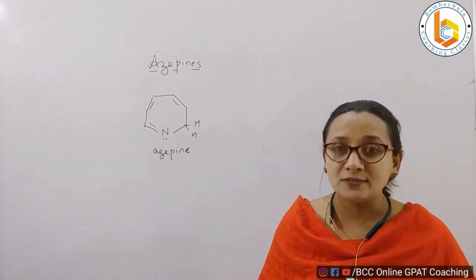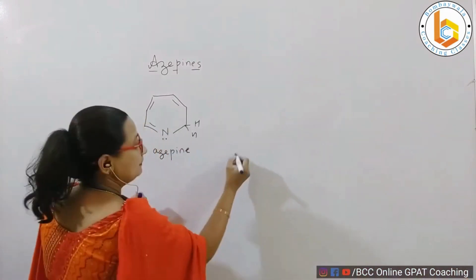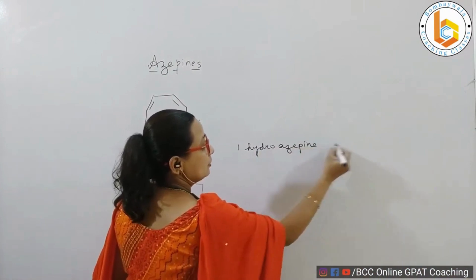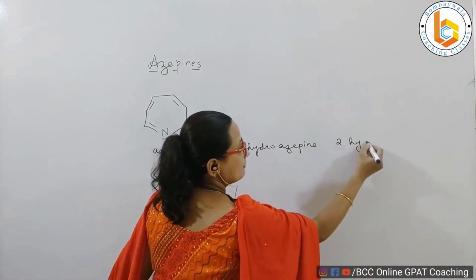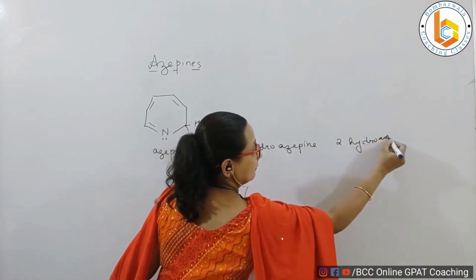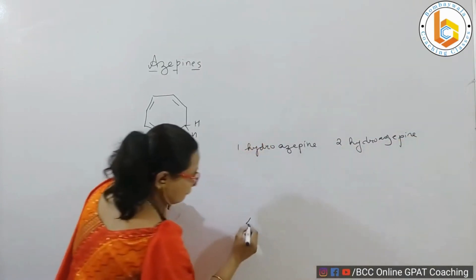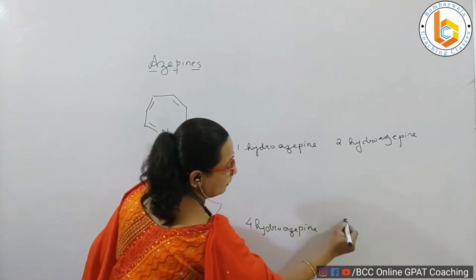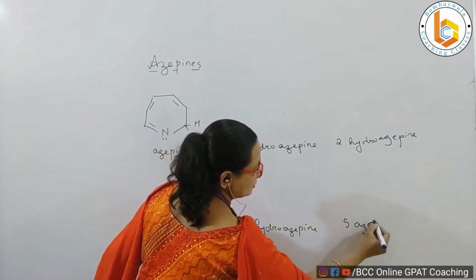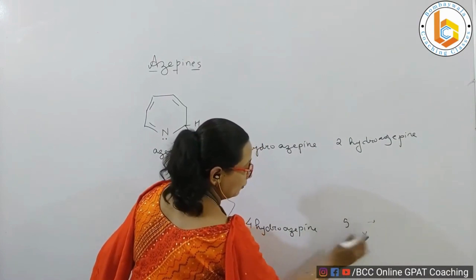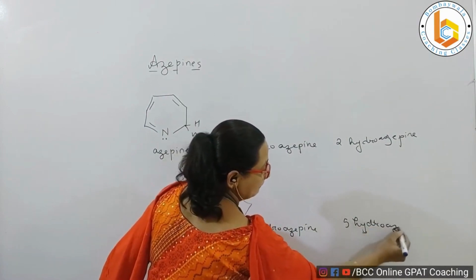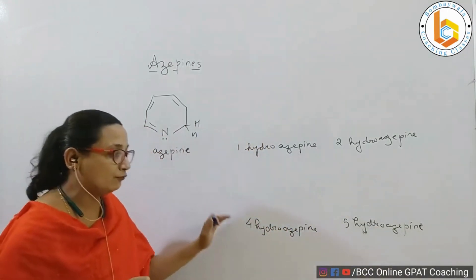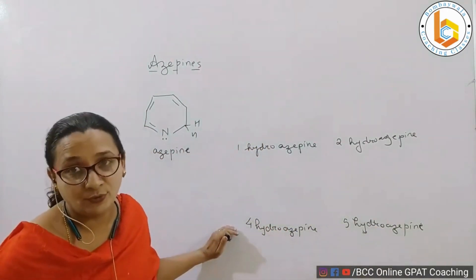Now, azepines are classified as 1-hydroazepine, 2-hydroazepine, 4-hydroazepine, and 5-hydroazepine. Let's look at how to write the structures of each of these.